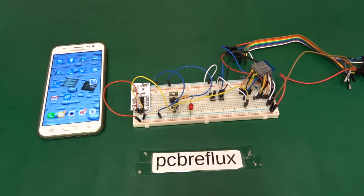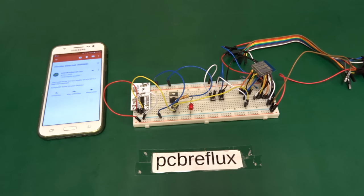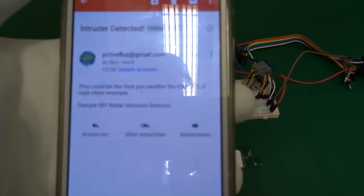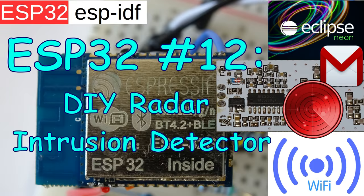Hi! Today's topic is the ESP32 and radar sensors and how we can combine them to implement some kind of intrusion detection.